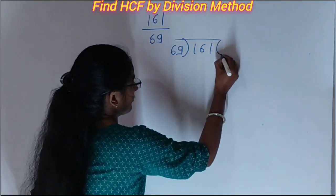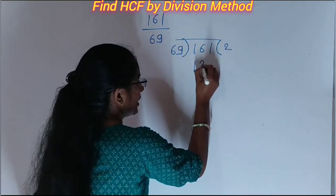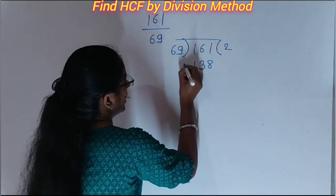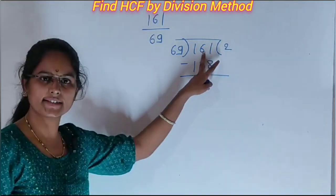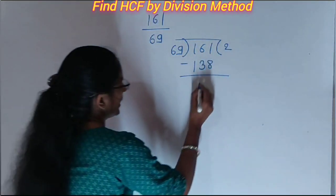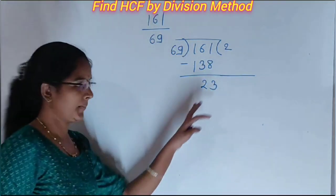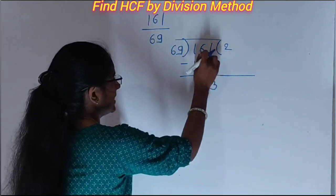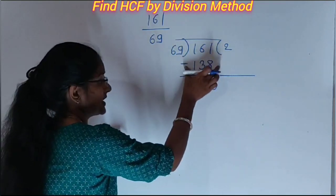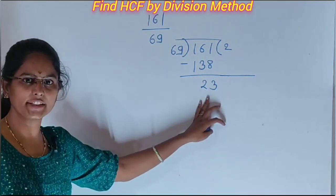Then 69 twos are 138. Then subtract 138 from 161. At that time we get 23. We get 23.